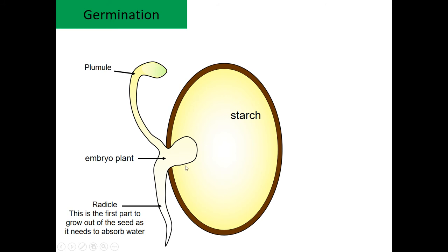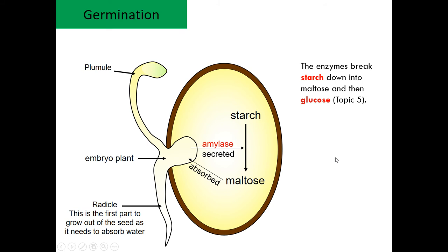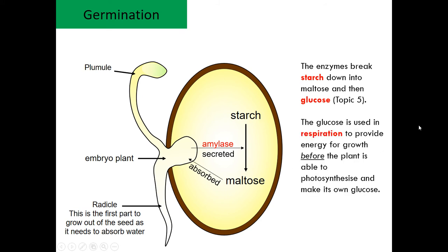Once the seeds germinate a little more, you start to get the embryo plant — the radicle, which is the root part, and the plumule, which becomes the flowering part of the plant. Amylase is secreted, and hopefully you remember that amylase breaks down starch, which allows maltose to be produced. Maltose can be absorbed and used for respiration — it's broken down into glucose, and glucose plus oxygen goes to carbon dioxide and water.